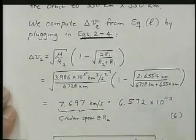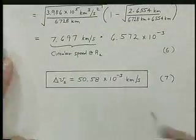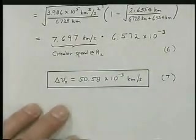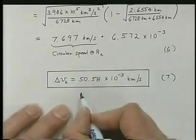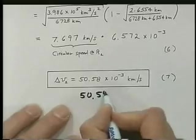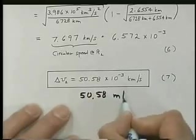This turns out to also be a small number. And we finally get, for delta V2, a number just a little bit smaller than the one we got earlier. This is a different maneuver and it's 50.58 meters per second.